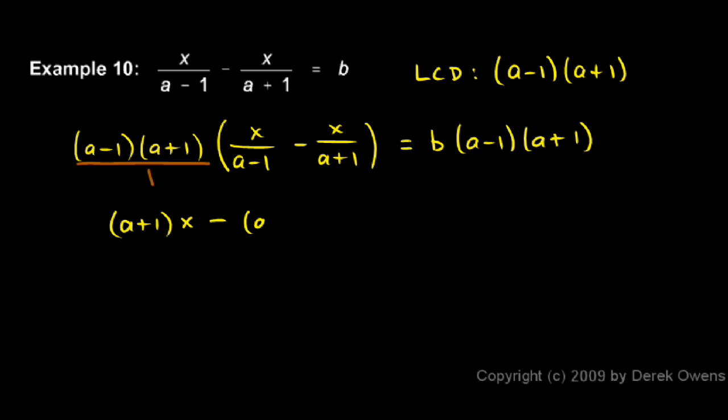On the right side, I have b times this. I can go ahead and do a FOIL on this, which gives me b times all of that. When I do a FOIL, I get a squared, and you can see I have a plus a and a minus a, which cancel out.